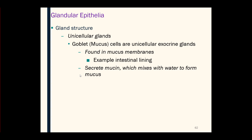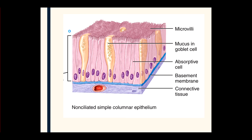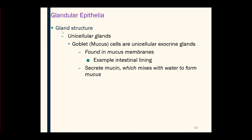Let's take a look at glandular structure. We can have two categories: unicellular glands and, a little bit more complex, multicellular glands. Unicellular means one, so this is a gland that is just one cell. We typically call it a goblet cell or a mucous cell — they're used interchangeably. These are just one-cell exocrine glands.